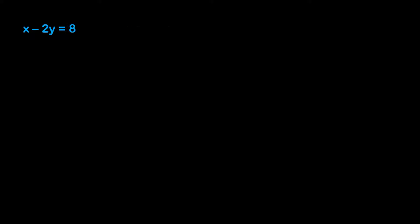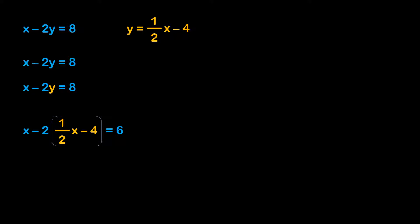Let's do one more example. Here we have one equation in standard form and another in slope-intercept form: x minus 2y is equal to 8, and y is equal to 1/2 x minus 4. I'm going to solve this by substitution. I'll rewrite the first equation, then substitute the value for y from the second equation, giving me x minus 2 times (1/2 x minus 4) is equal to 8. Distributing, that gives me x minus 2/2 x plus 8 is equal to 8.